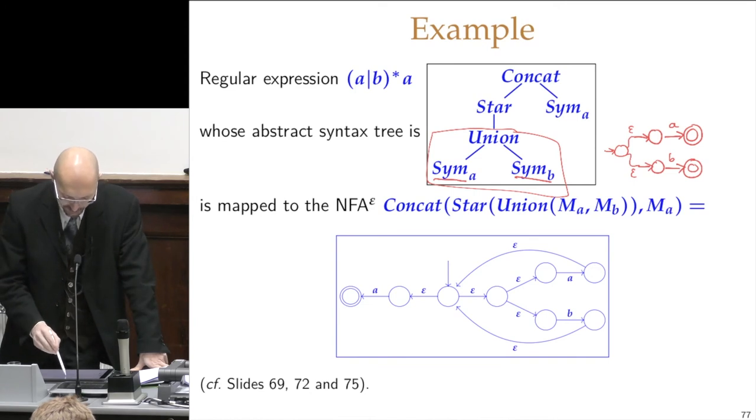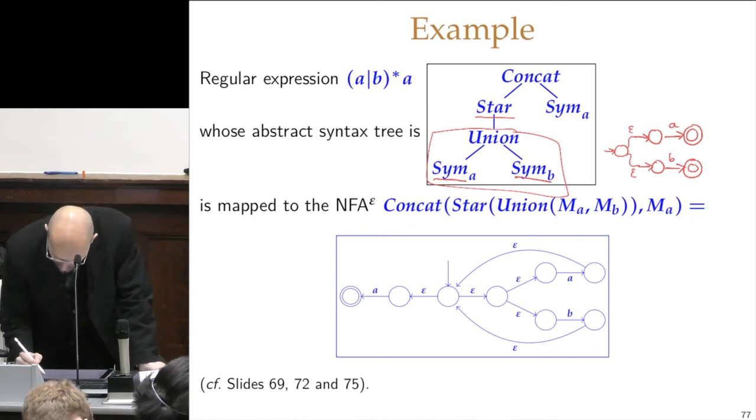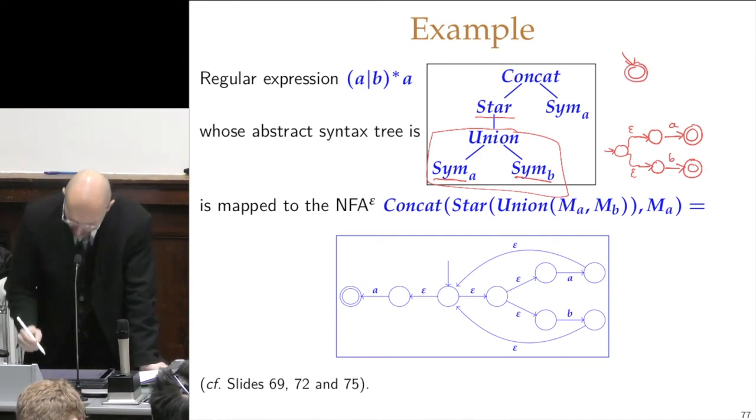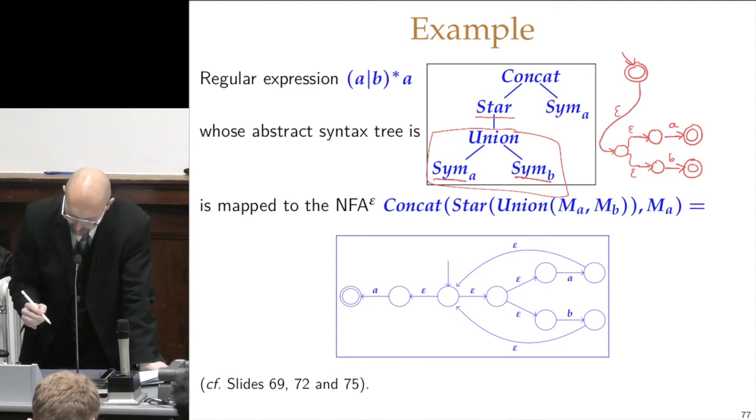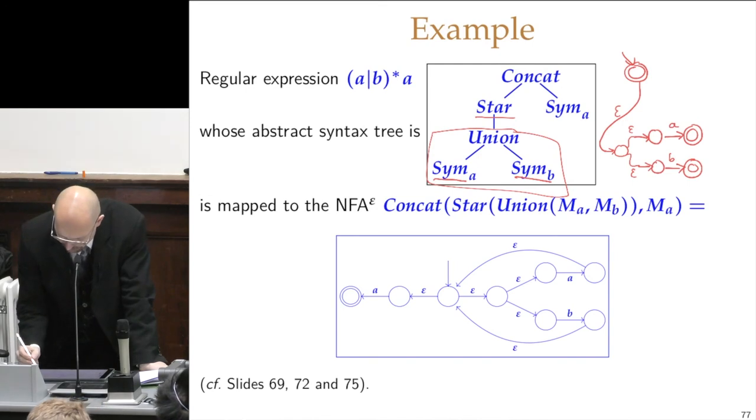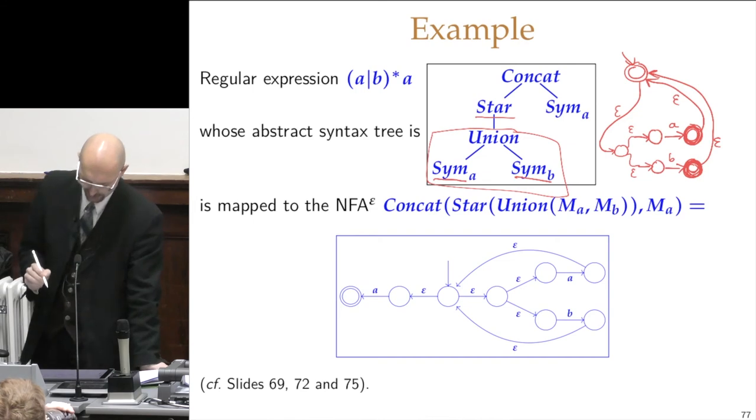Then the star, the last thing we saw last time, was obtained by making a starting state and making it accepting because you could also execute it zero times, and otherwise going with an epsilon transition to your machine to be starred, and from its accepting states, which are no longer accepting, so I'm just going to make this thing not a double circle, going from that to your new accepting state.